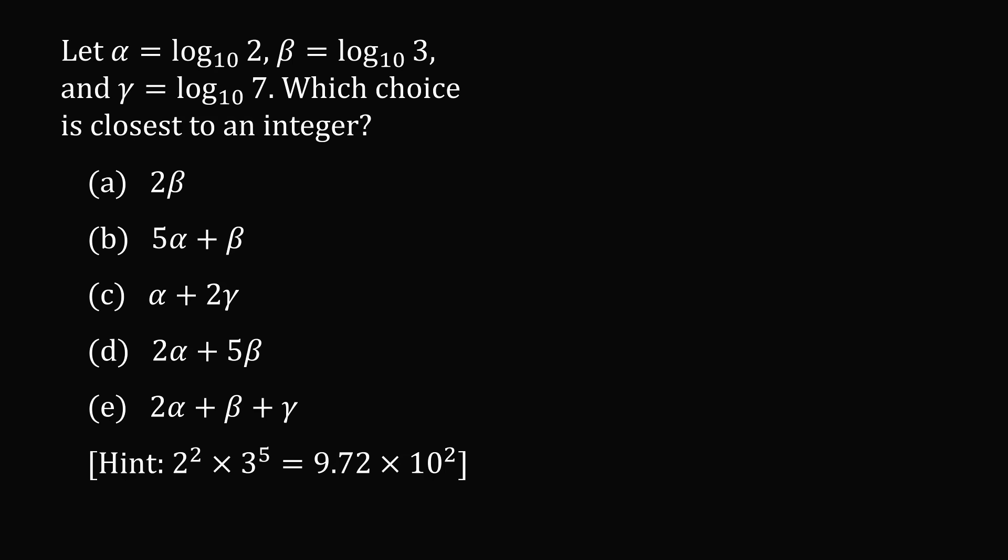You're given a hint that 2 squared times 3 to the power of 5 is equal to 9.72 times 10 squared.